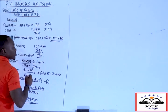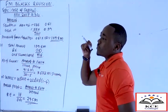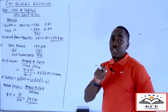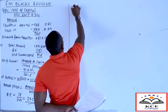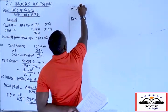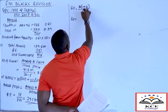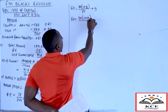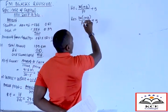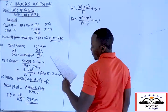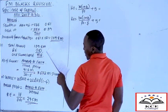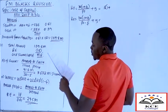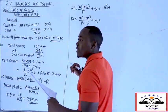When computing WMCC, we compute both the cost of retained earnings and the cost of ordinary shares — unlike WACC, where retained earnings cost is not separately considered. The cost of retained earnings = D₀(1 + g) / P₀ + g, and the cost of ordinary shares = D₀(1 + g) / (P₀ − flotation cost) + g. D₀ is 5 shillings (note 3), and g is 5% per annum (note 4).